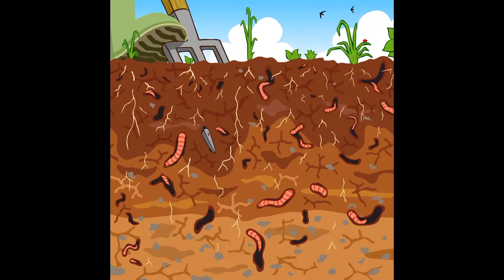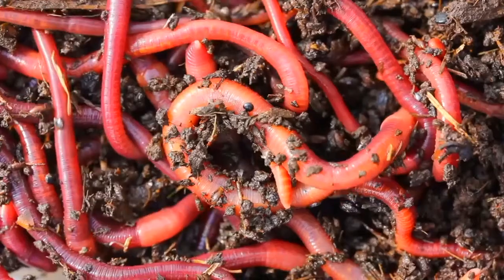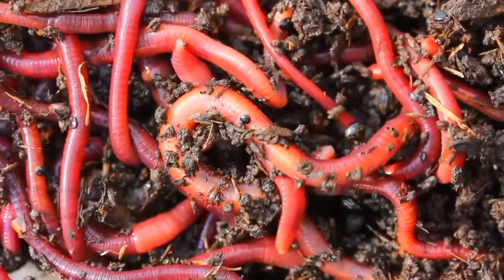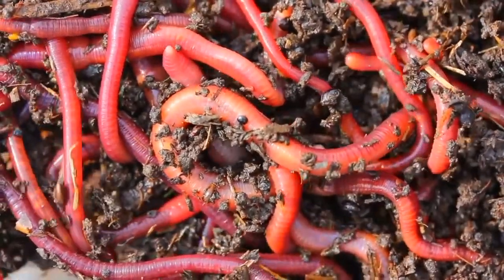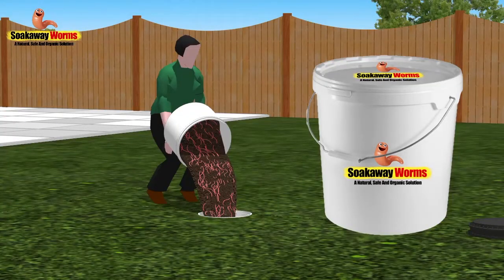Soak away worms will not only unblock your soak away from all the fat and the grease and the sludge, but they'll also keep it clean, preventing your septic tank and soak away from ever developing problems again. Soak away worms come in a large bucket.